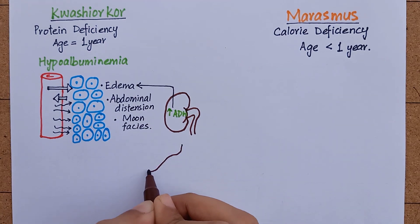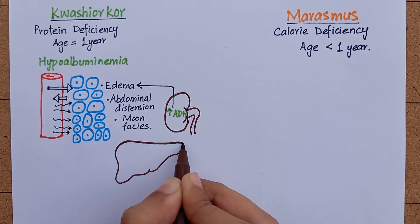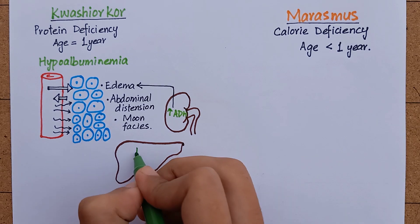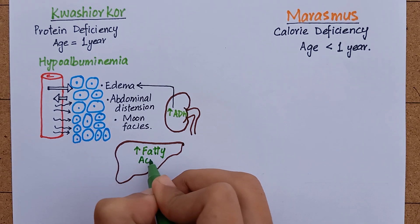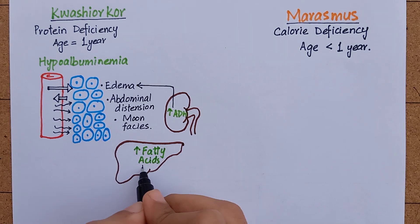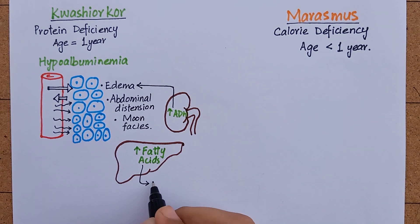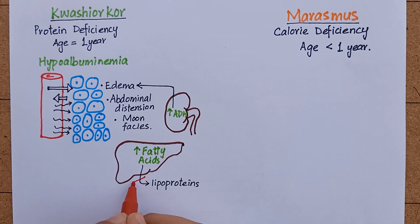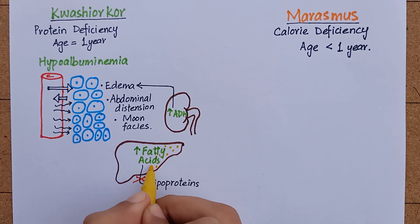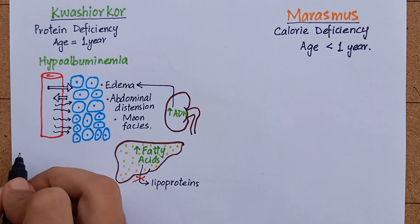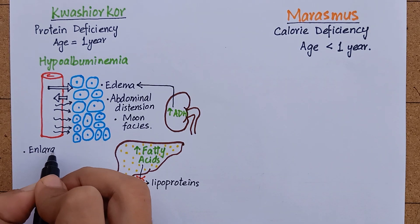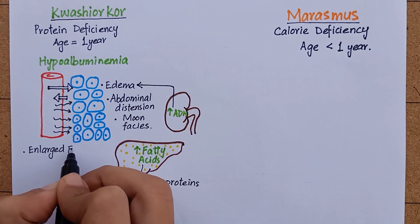Low levels of plasma proteins also cause increased synthesis of fatty acids by the liver and reduced secretion of lipoproteins. This fat deposition results in an enlarged fatty liver, which is another important symptom of kwashiorkor.